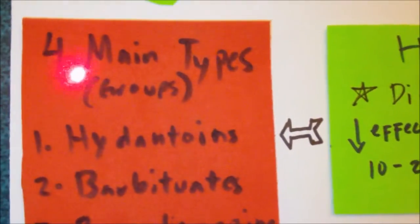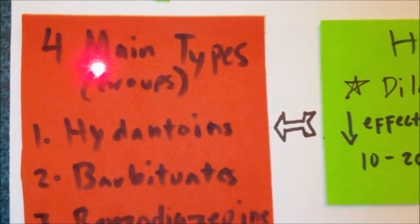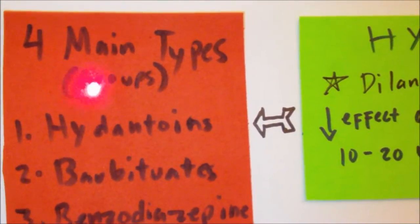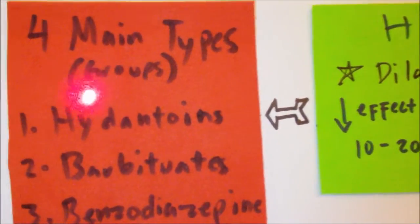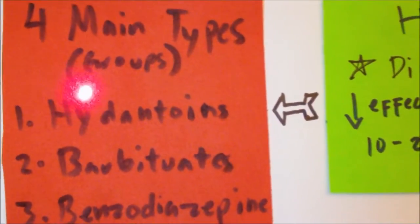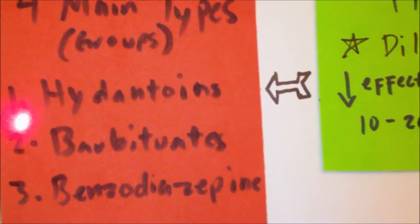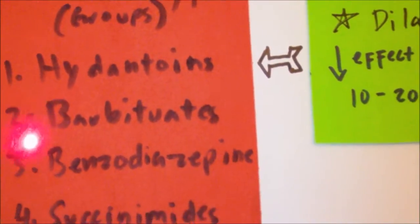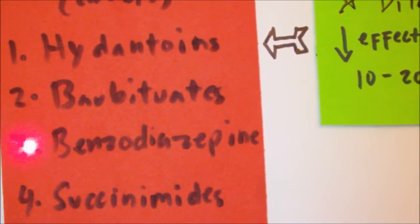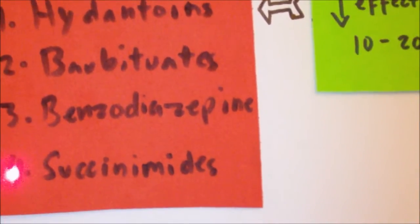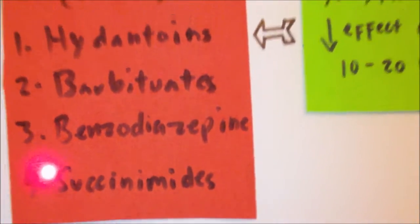The four main types of anticonvulsant medications to know for the NCLEX — these are not specific individual drugs, but instead these are the types of groups — and it includes hydantoins, barbiturates, benzodiazepines, and succinimides.